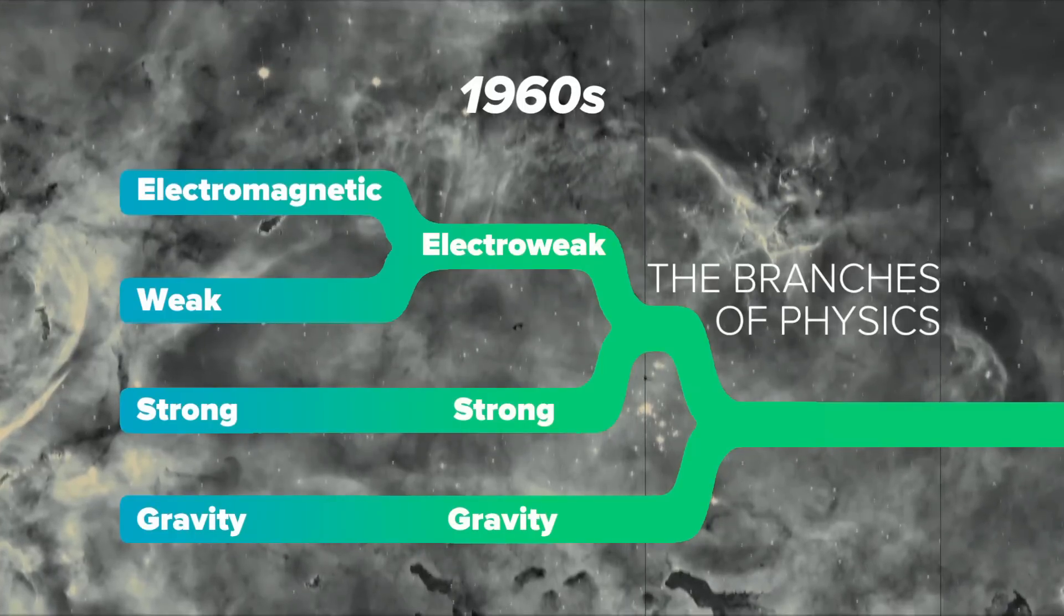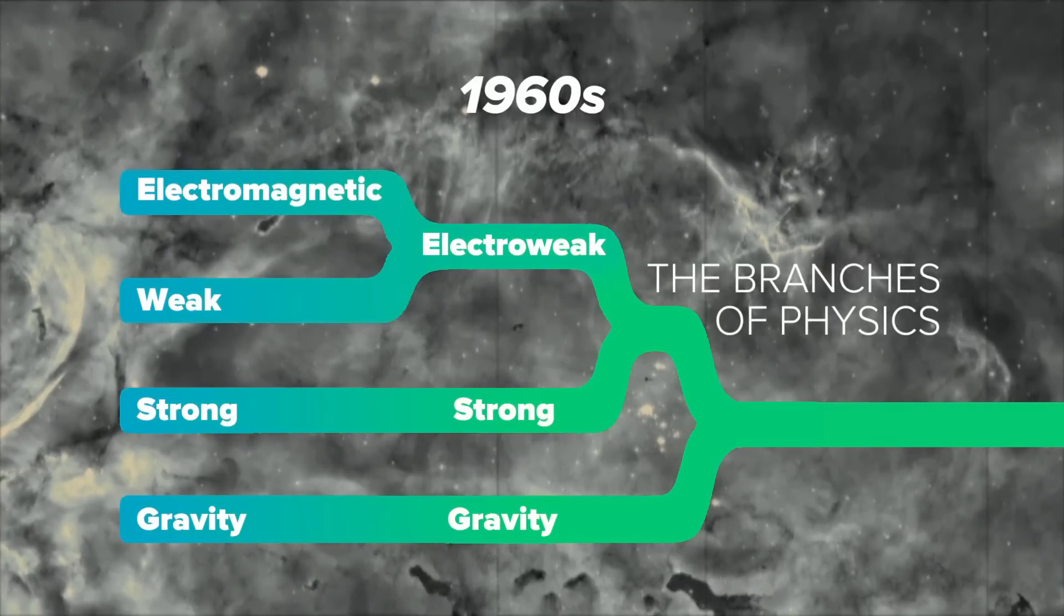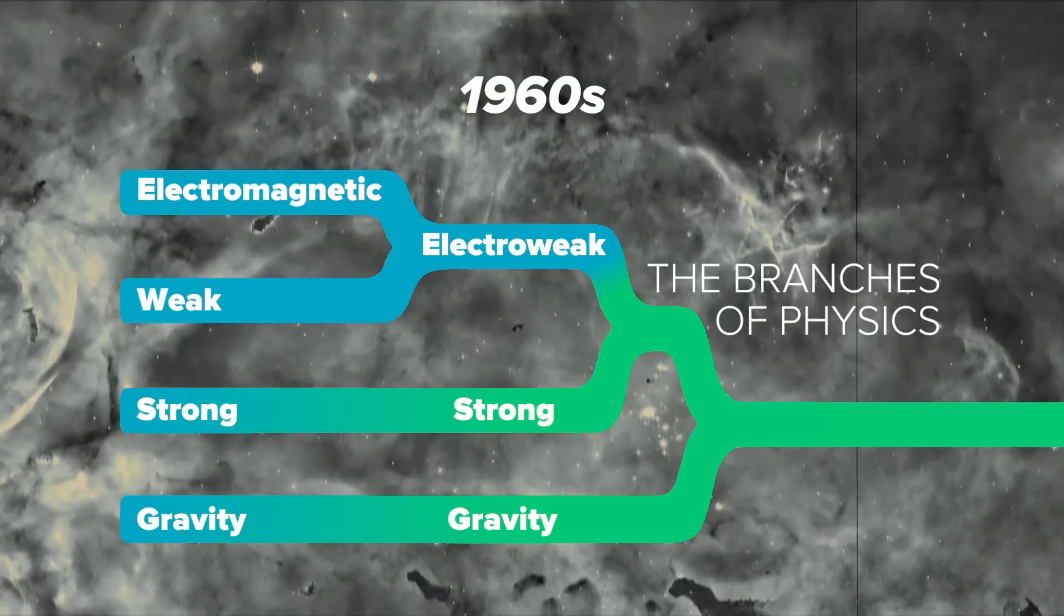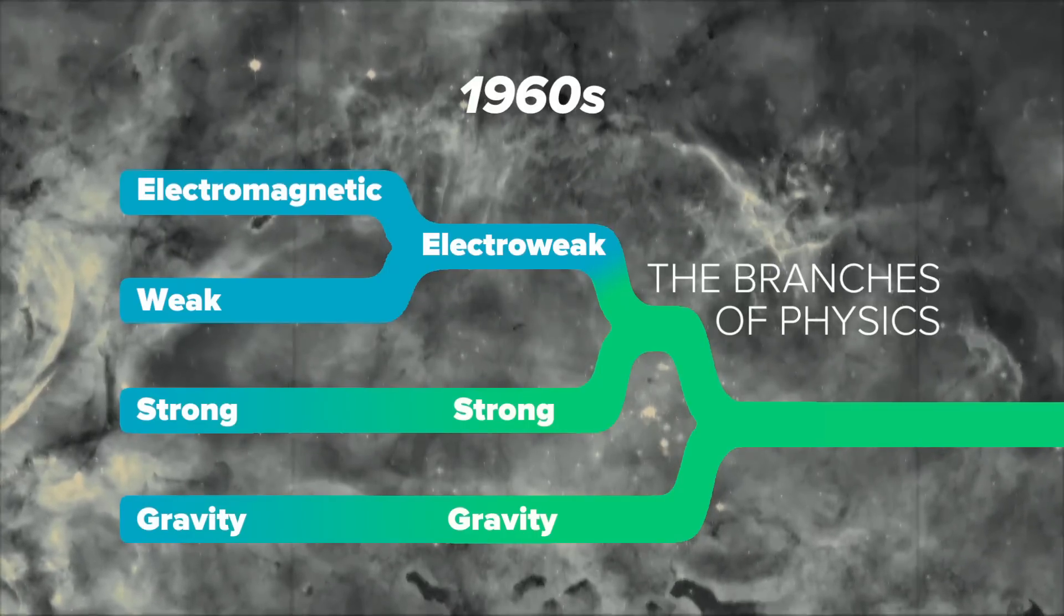It was in the 1960s that theoretical physicists were able to show that they could unify the weak nuclear force and electromagnetism. Now that turned out to be a surprising thing for a couple of reasons.